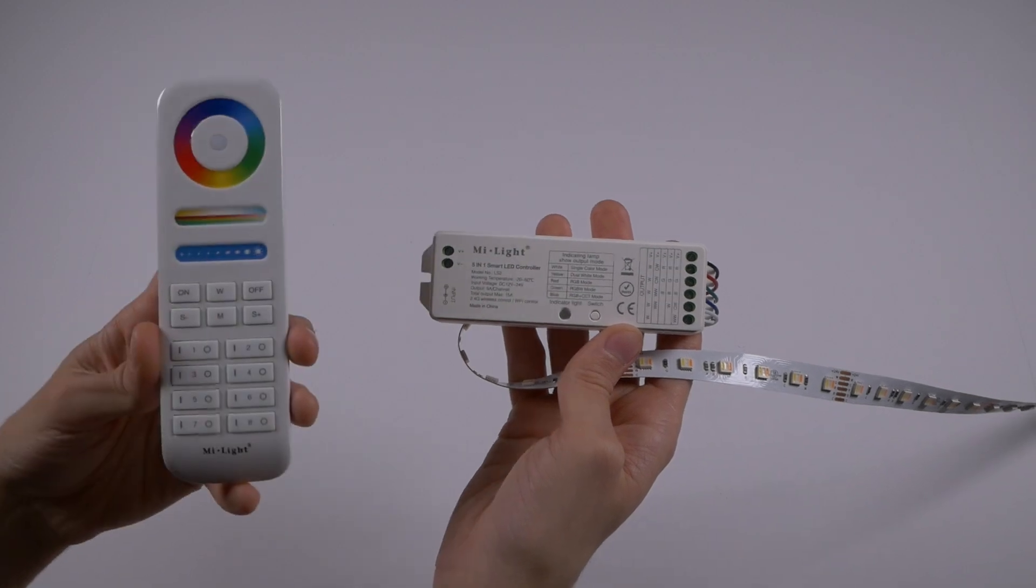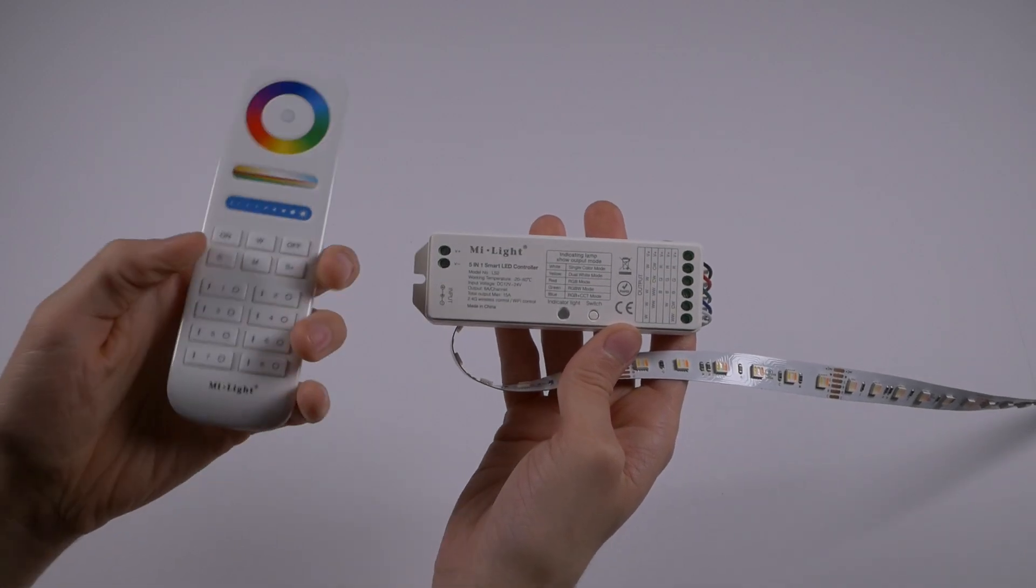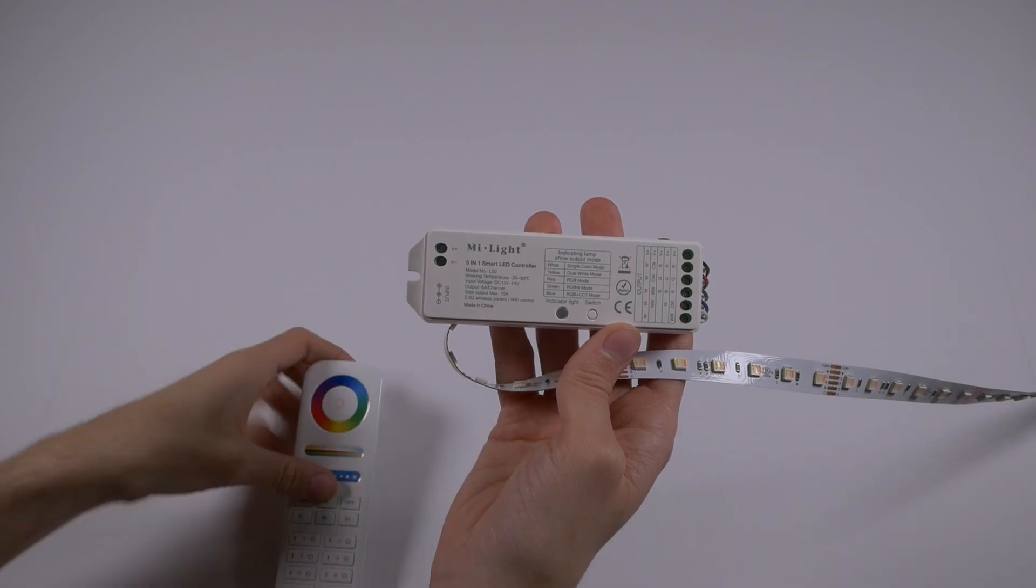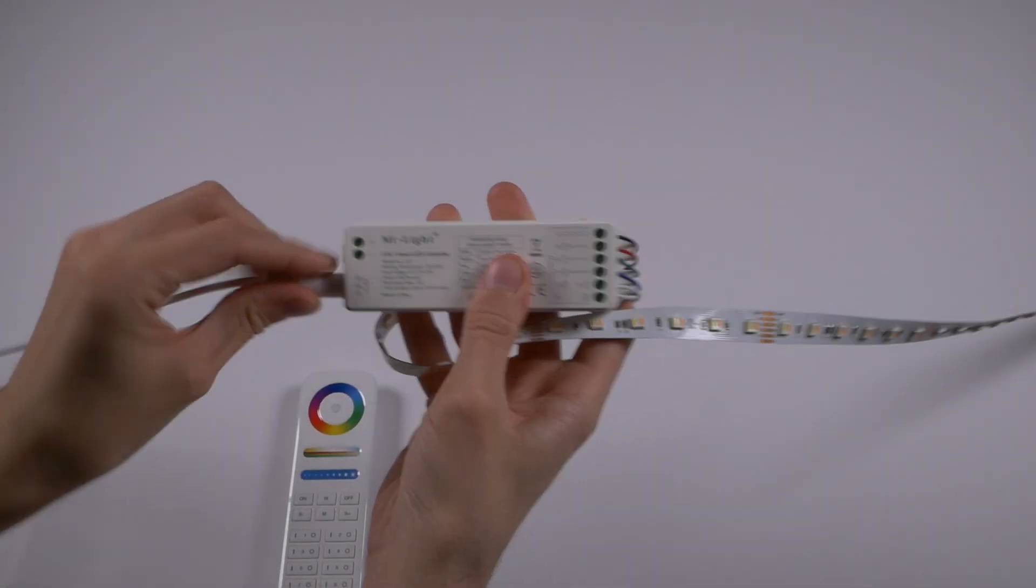The idea is the same if using the eight zone remote, but this time you'll have to pair it to a specific zone by simply tapping the power button for the desired zone three times within three seconds.